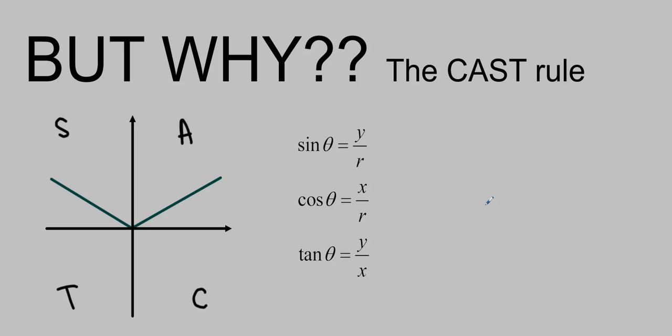Hello and welcome to Ms. Ma's But Why series. This is the CAST rule. I'm going to talk about why the trigonometric ratios are all positive in the first quadrant, sine is positive in the second quadrant, tan is positive in the third quadrant, and cos is positive in the fourth quadrant.